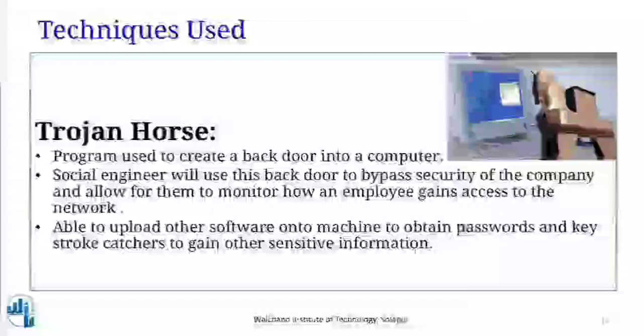The next technique is the Trojan horse — a program used to create a backdoor into a computer. A social engineer uses this backdoor to bypass company security and monitor how an employee gains access to the network. It is able to upload other software onto the machine to obtain passwords and keystroke catchers to gain other sensitive information. Essentially, the Trojan horse hides within a program or email attachment to gain backdoor entry into the computer or account.